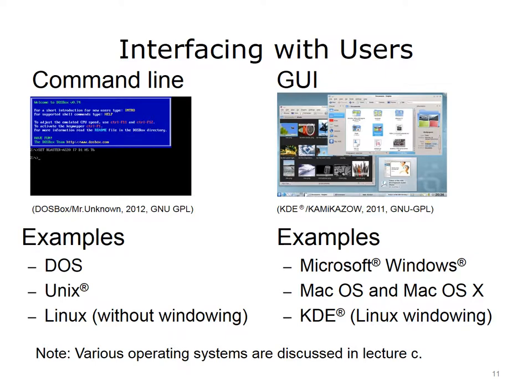Today, most operating systems provide graphical user interfaces, or GUIs, to interact with users. Users can see visual representations of files and use the mouse to click what they want to open, run, print, copy, or move. Some examples are the GUIs in operating systems such as Microsoft Windows, macOS, and the GUI windowing systems available for Linux. Linux does not include a GUI windowing environment by default; instead, there are several to choose from that will work with Linux. We will discuss some of the various operating systems in the next lecture.